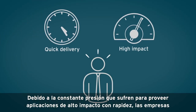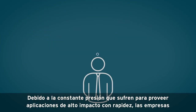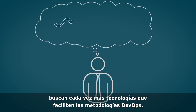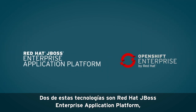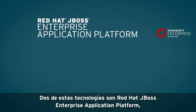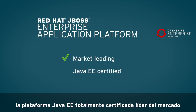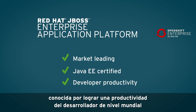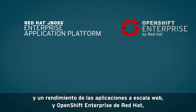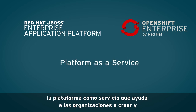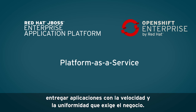Under pressure to quickly deliver high-impact applications, organizations are increasingly seeking technologies that enable DevOps methodologies, microservices architectures, and hybrid cloud environments. Two such technologies are Red Hat JBoss Enterprise Application Platform, the market-leading fully certified Java EE platform known for delivering world-class developer productivity and web-scale application performance, and OpenShift Enterprise by Red Hat, the platform as a service that helps organizations create and deliver applications with the speed and consistency that business demands.